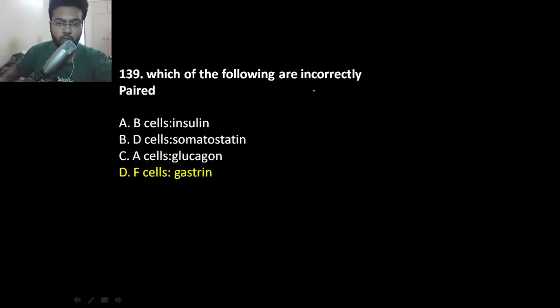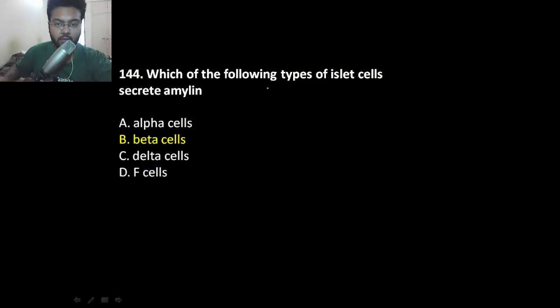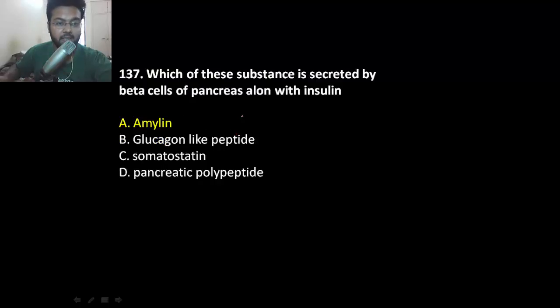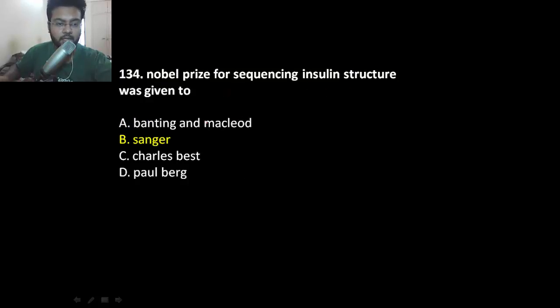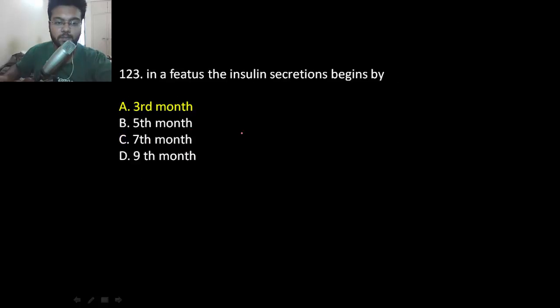MCQs which of the following is incorrectly paired. F cell releases pancreatic polypeptide. F cell with the following types of cell releases amylin beta cell which is secreted along insulin amylin. Nobel Prize goes to Sanger. Remember Banting and McLeod got Nobel Prize for discovery of insulin, not sequencing of that structure.